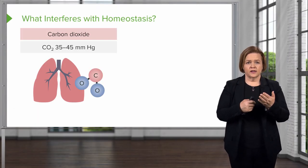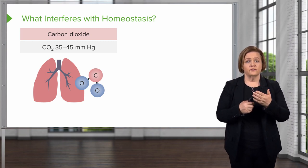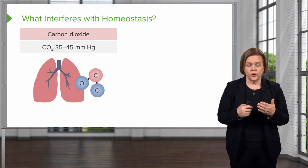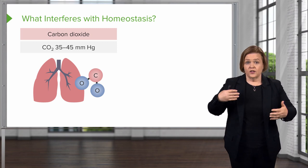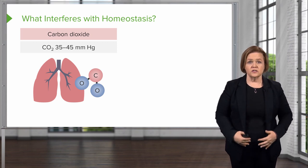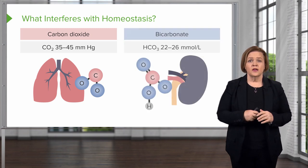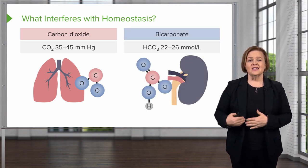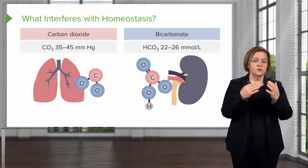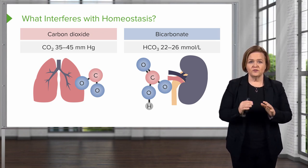We're going to talk about the things that force the body towards acidosis or alkalosis — what are the things that change my pH? Let's talk about carbon dioxide. The normal carbon dioxide is 35 to 45, and that is controlled by the lungs. Hemoglobin carries CO2 back up to the lungs so you can expel it and pick up more oxygen to deliver to the tissues. Bicarbonate is controlled by the kidneys. So carbon dioxide is controlled by the lungs, bicarbonate is controlled by the kidneys.